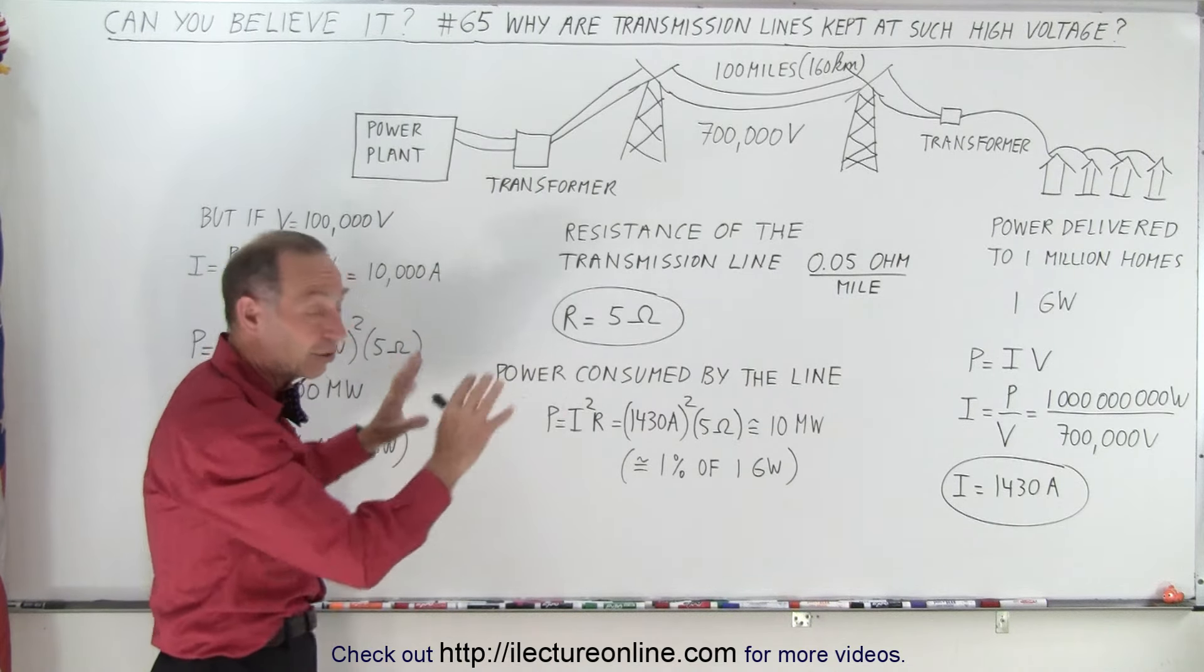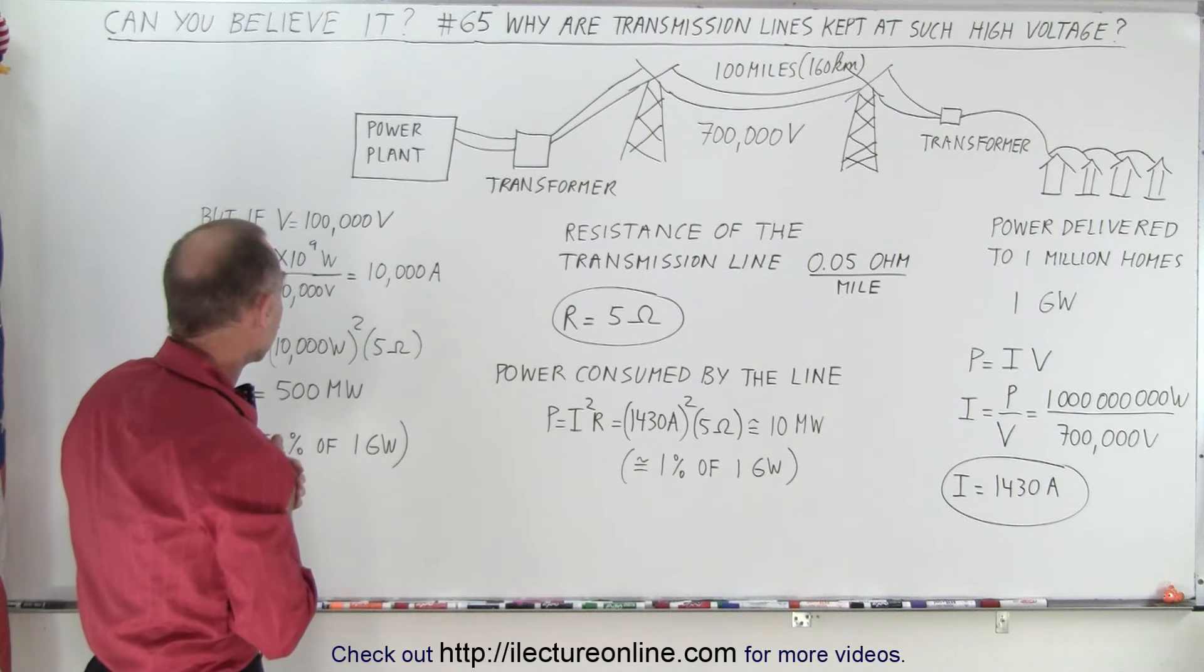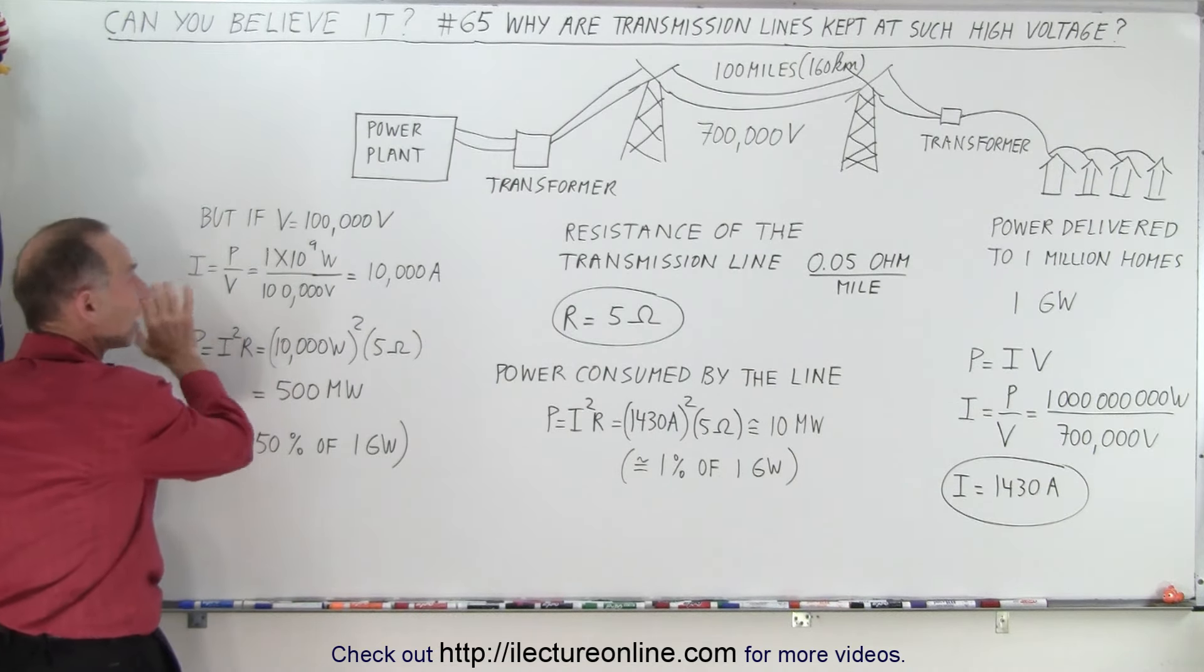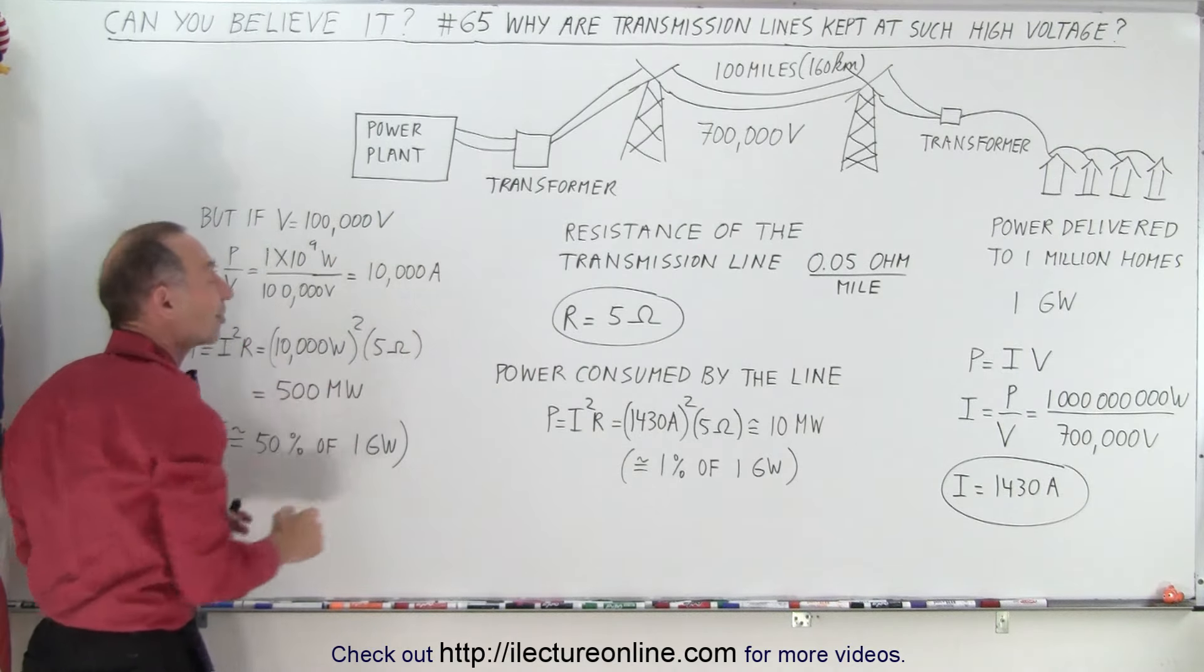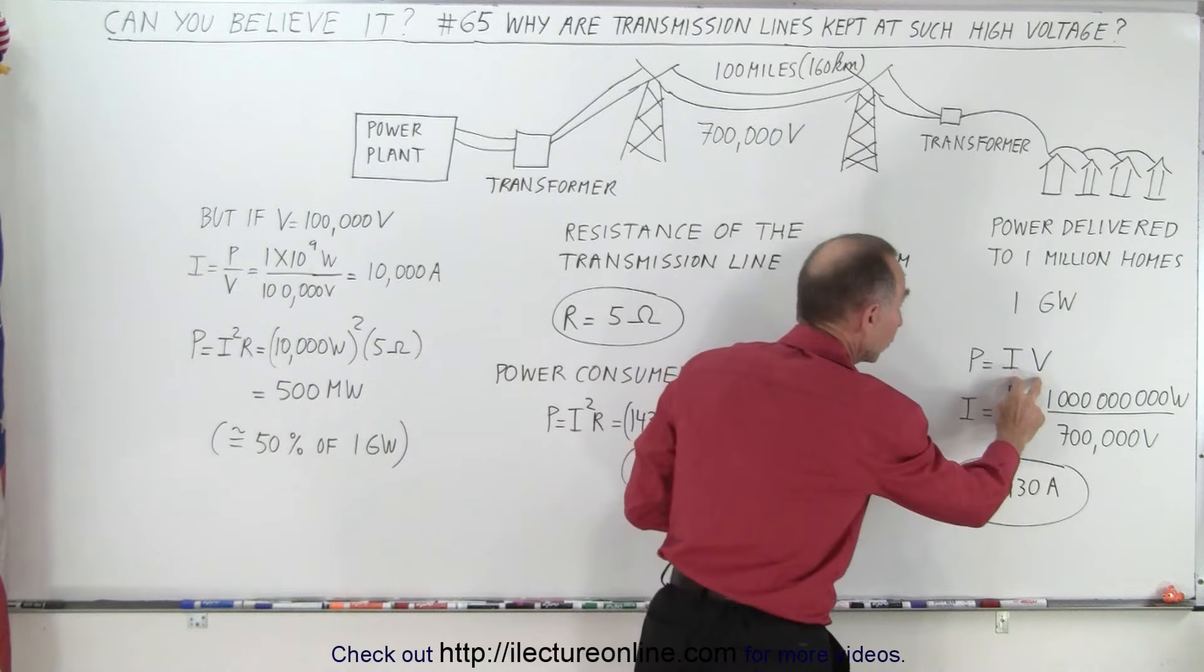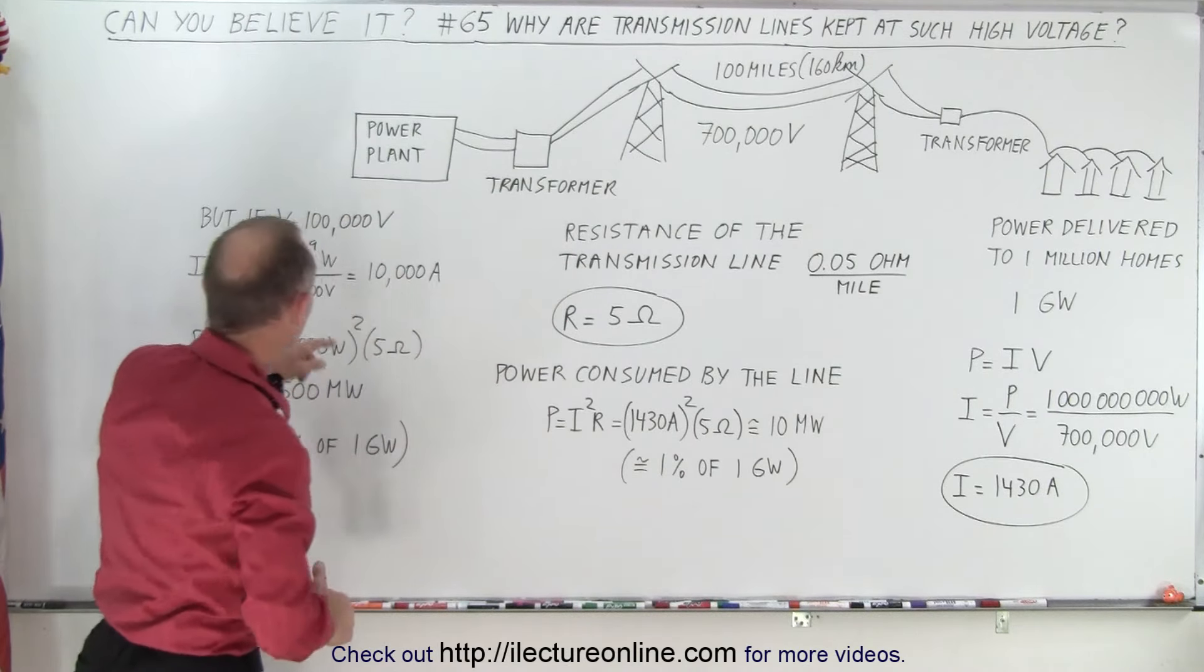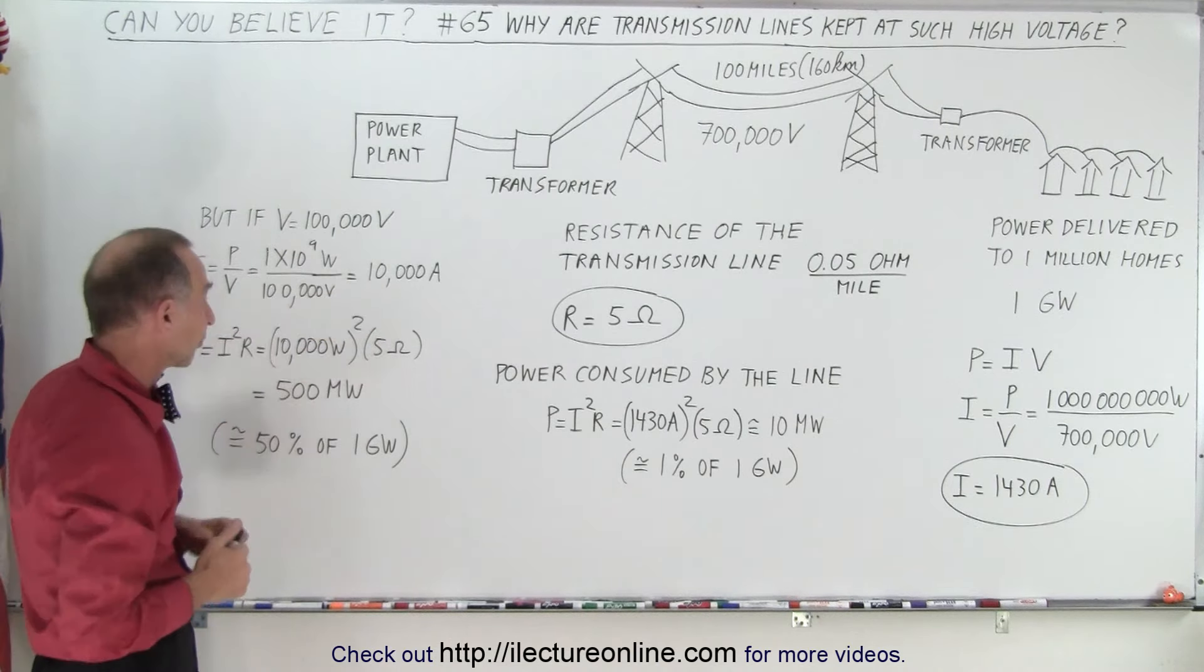Now obviously this is just a purely hypothetical situation, but it does represent real life pretty well. So what would happen if we only stepped up to 100,000 volts? Using the same equation to send the same amount of power to those million homes would now require a current of 10,000 amps. Because the power delivered is the product of the two, so when you lower the voltage you have to increase the current. So now you're sending way more current down that wire if it's only at a hundred thousand volts. Now it requires 10,000 amps of current.